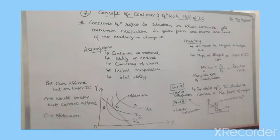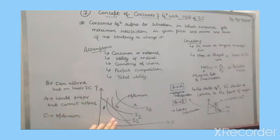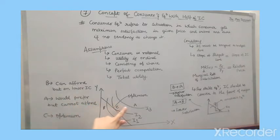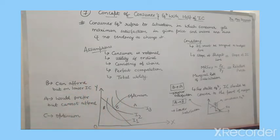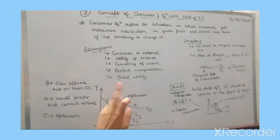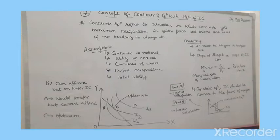What about point B? Point B is affordable, but its IC is lower. And point A? People prefer it and want to use it, but they cannot afford it because its IC is much higher. Point C — people can afford it and also prefer it. So C point is our optimum choice.